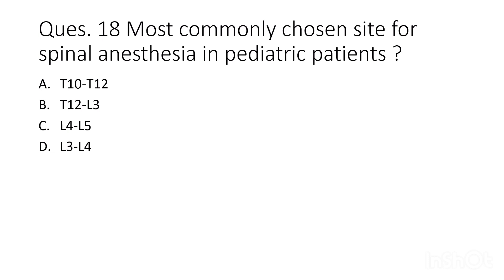Seventeenth question: what is the most preferred site for spinal anesthesia in pediatric patients? Options are T10–T12, T12–L3, L4–L5, or L3–L4. The correct answer is L4–L5, because in pediatric patients the spinal cord ends at the L2 region, so L4–L5 is chosen to prevent any damage to the spinal cord.